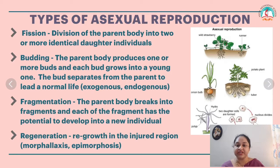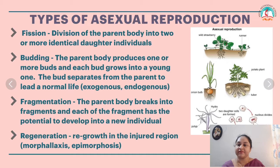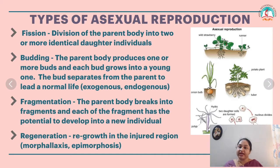Fission is the division of the parent body into two or more identical daughter individuals. Budding is where the parent body produces one or more buds and each bud grows into a young one. The bud separates from the parent to lead a normal life. Budding can be exogenous or endogenous.